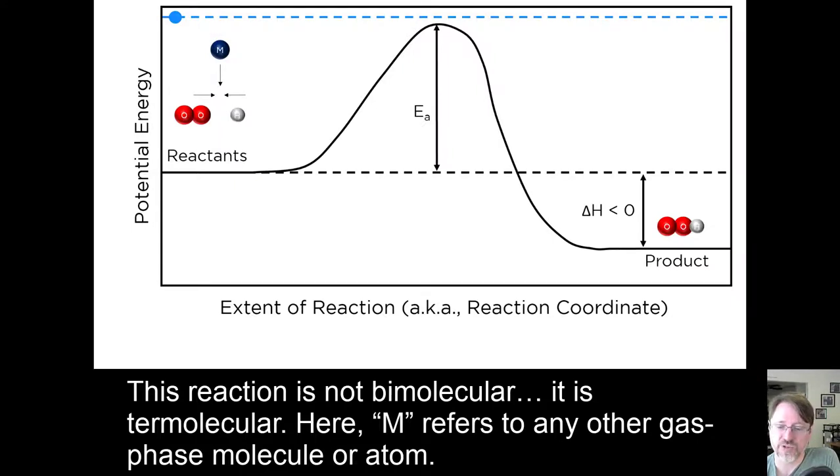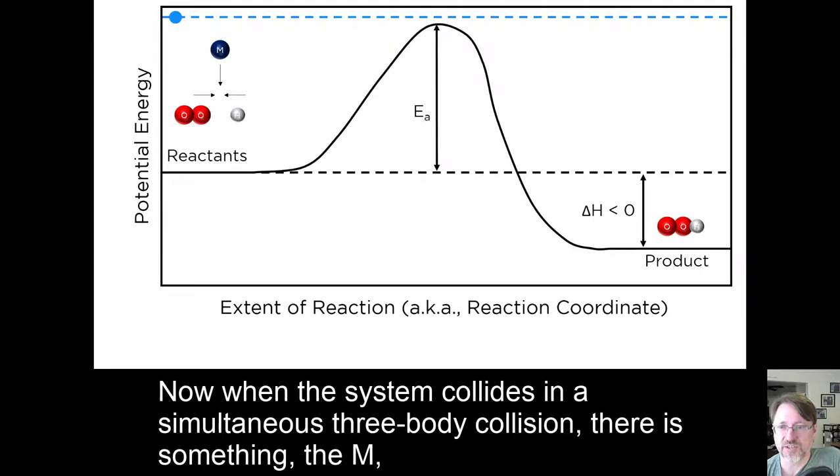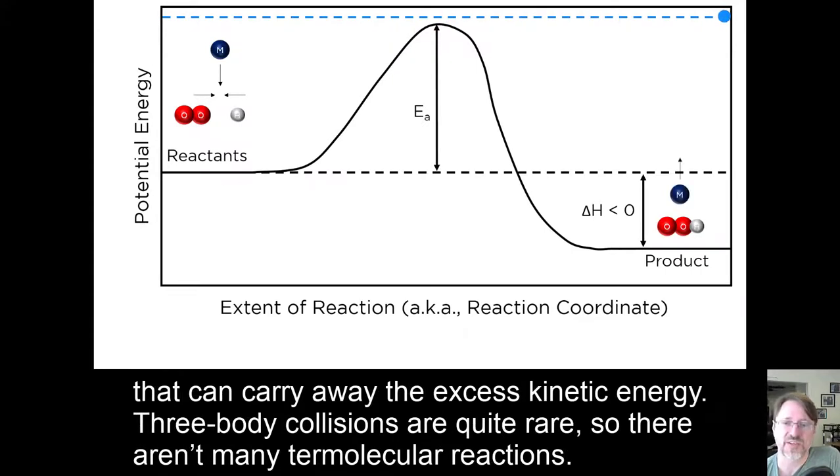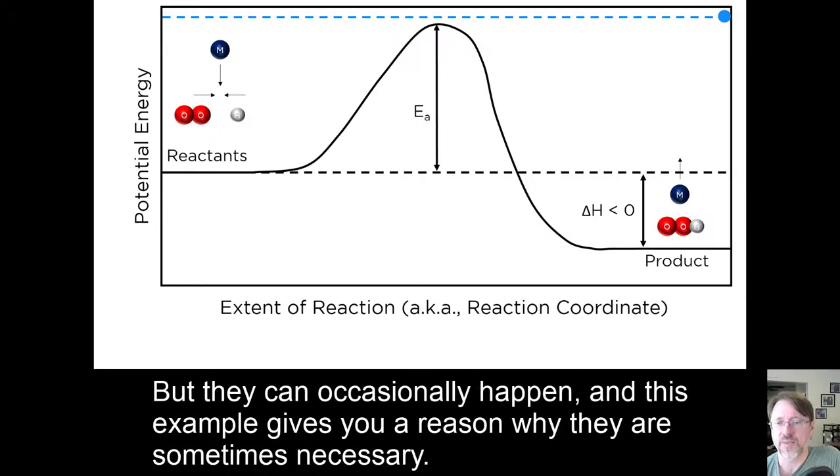Here, M refers to any other gas molecule or atom. Now when the system collides in a simultaneous three-body collision, there is something, the M, that can carry away the excess kinetic energy. Three-body collisions are quite rare, so there aren't many termolecular reactions, but they can occasionally happen, and this example gives you a reason why they are sometimes necessary.